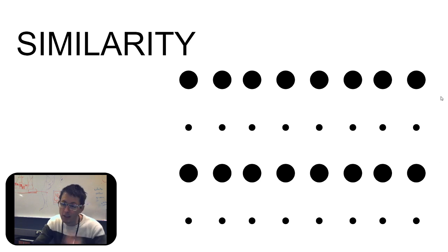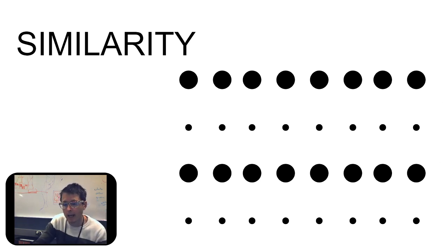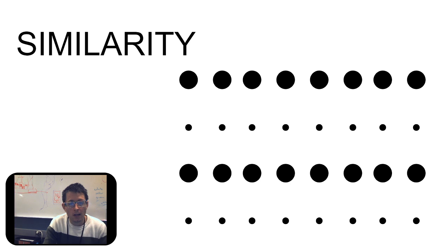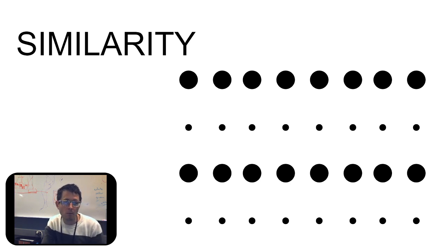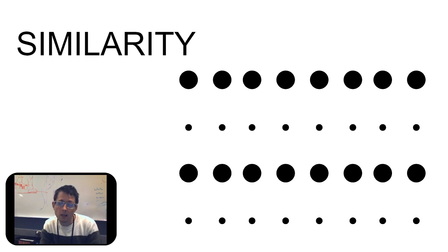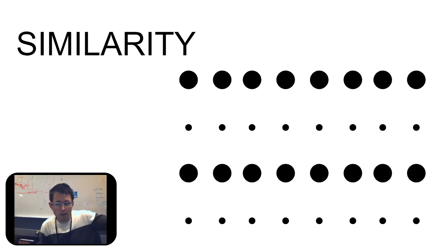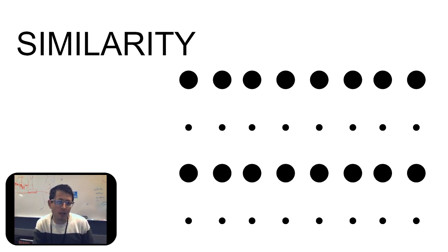What about similarity? Similarity is the idea that we place like with like, and we're able to start bringing those things together. So when you look at this, do you group them by big and small? Or do you group them by column? No — the thing that you're going to group them by is most likely going to be these horizontal lines where they seem to be in a row together.